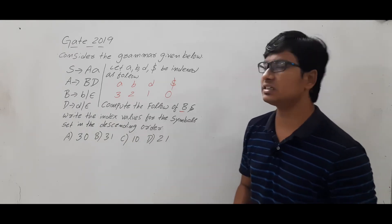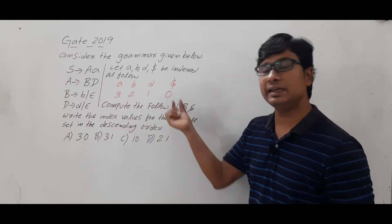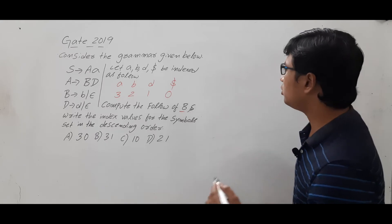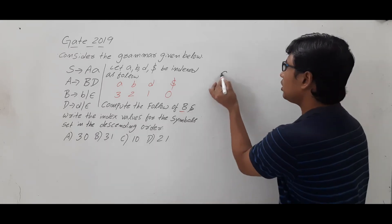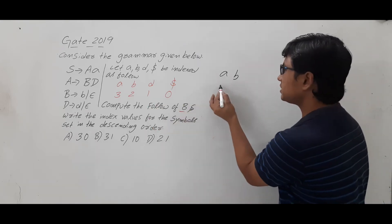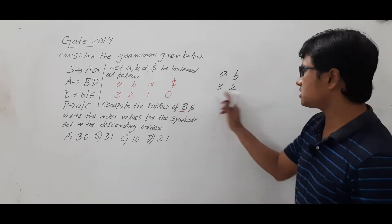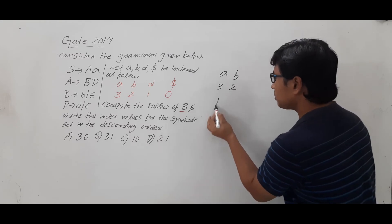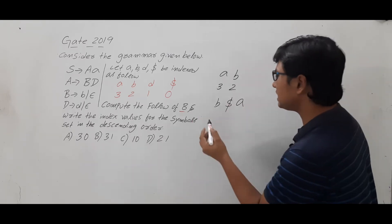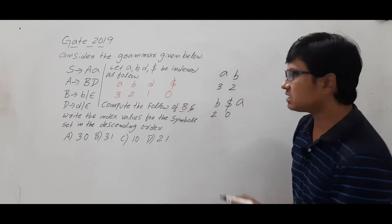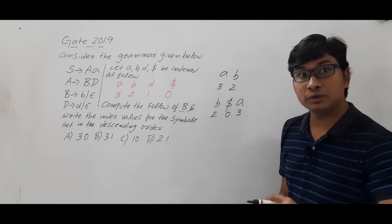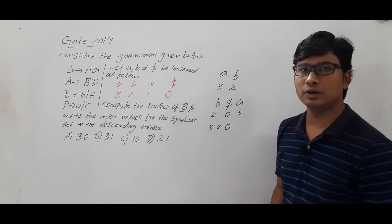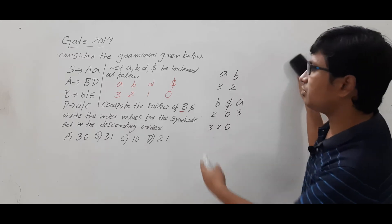They are asking to compute Follow(B) and write the index values in descending order. For example, if Follow(B) = {A, B}, you represent the index values in decreasing order as 3, 2. If you got {B, dollar, A}, then B's index is 2, dollar's index is 0, A's index is 3, and you represent them in descending order as 3, 2, 0.